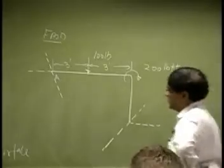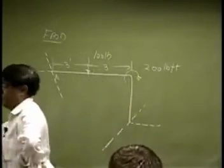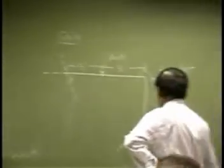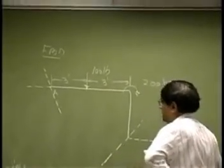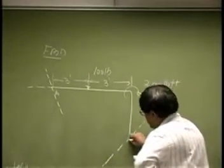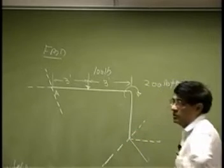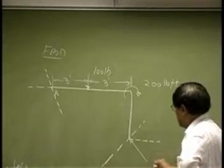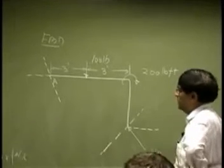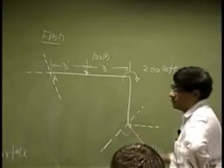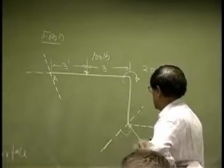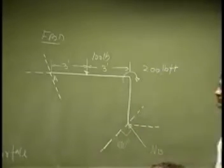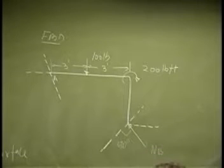Now, in addition to this, at point B which is resting on a smooth surface, you should have a reaction, and that reaction would be normal to the surface. So there will be a force here — let's call this NB. The angle between the surface and the force is going to be 90 degrees. So that's one reaction.